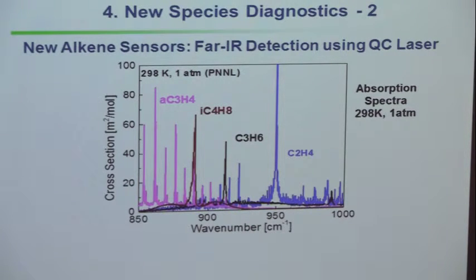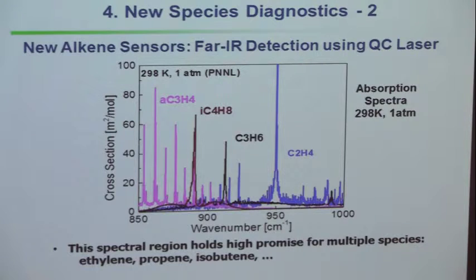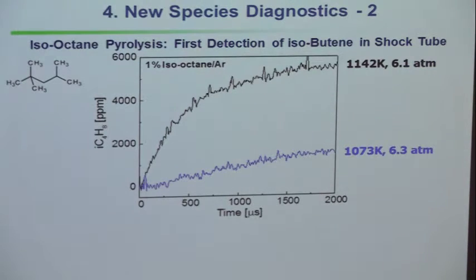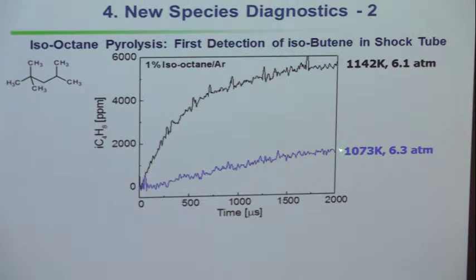You start by figuring out where you think you should be, go into the shock tube and measure cross-sections of all the species, and try to figure out a multi-wavelength strategy that will work. Isobutene is a good example. We began to work with an 11-micron laser. Here's isobutene from iso-octane pyrolysis: when iso-octane decomposes, it forms isobutene. At 1100 degrees, the isobutene forms — faster at higher temperature of course. We've convinced ourselves we can measure isobutene in the pyrolysis of iso-octane and determine rate coefficients relevant to modeling real fuels.